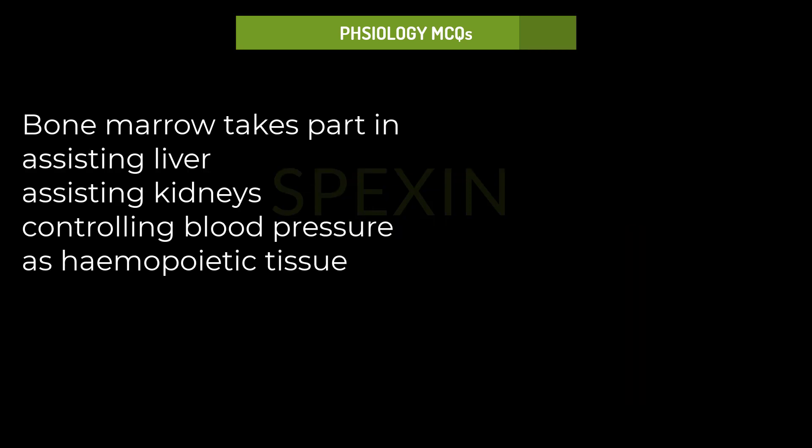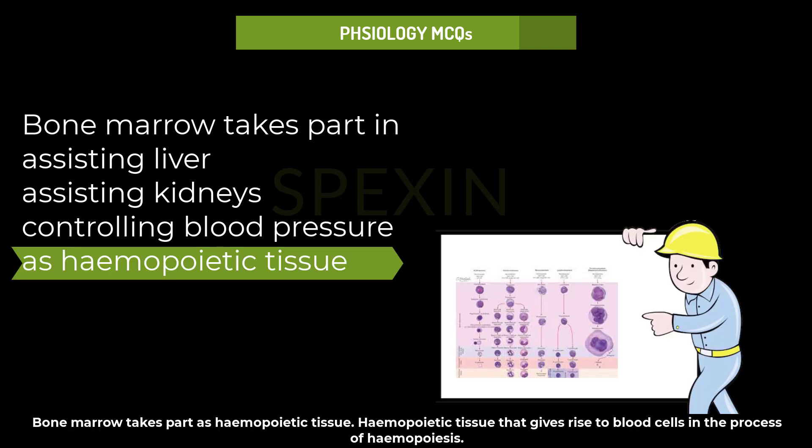Bone marrow takes part in: assisting liver, assisting kidneys, controlling blood pressure, or as hemopoietic tissue? Bone marrow takes part as hemopoietic tissue — the tissue that gives rise to blood cells in the process of hemopoiesis.